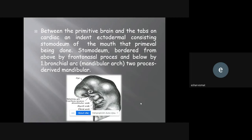Between the primitive brain and the heart, there's an ectodermal invagination called the stomodium. The stomodium is the start of formation of the mouth. The stomodium is bordered from above by the frontal nasal process and below by the first branchial arch, which will form the mandibular arc. These two processes are derived: the mandibular arc is formed from the frontal process and from the first branchial arch.